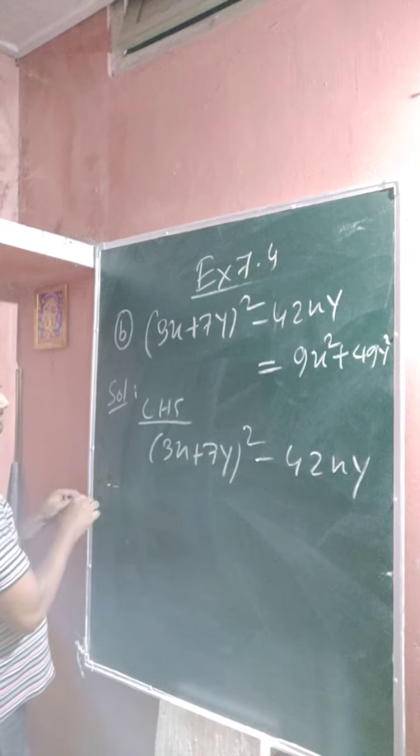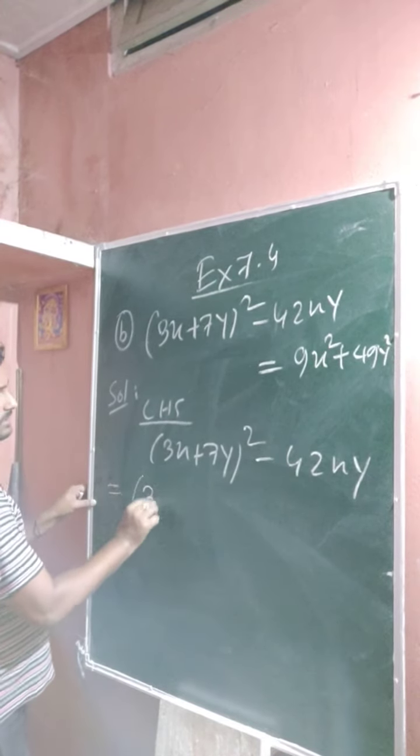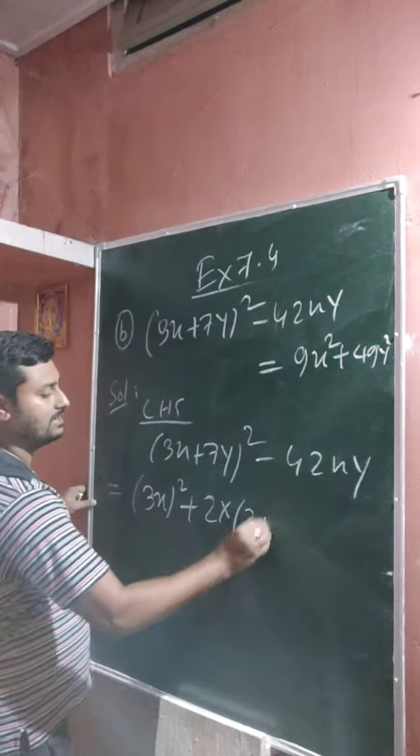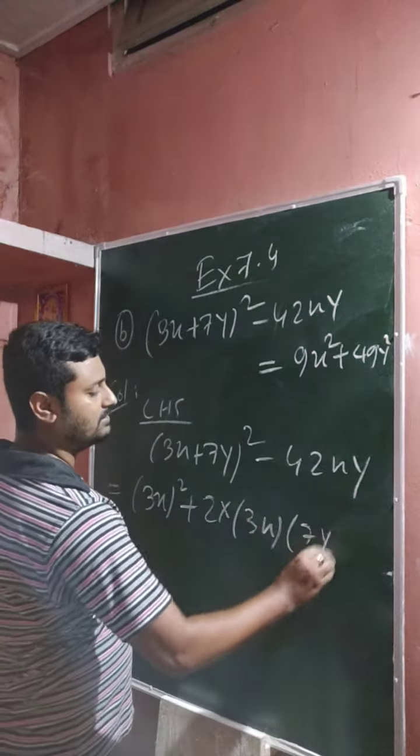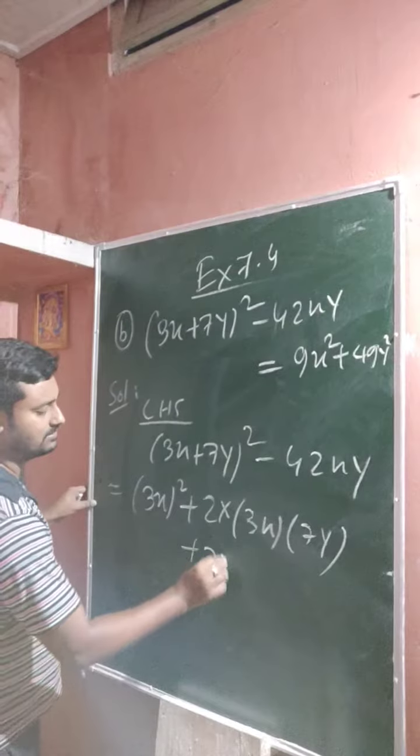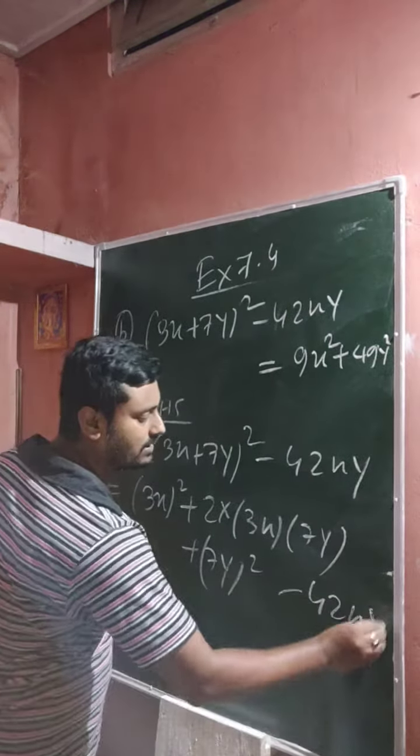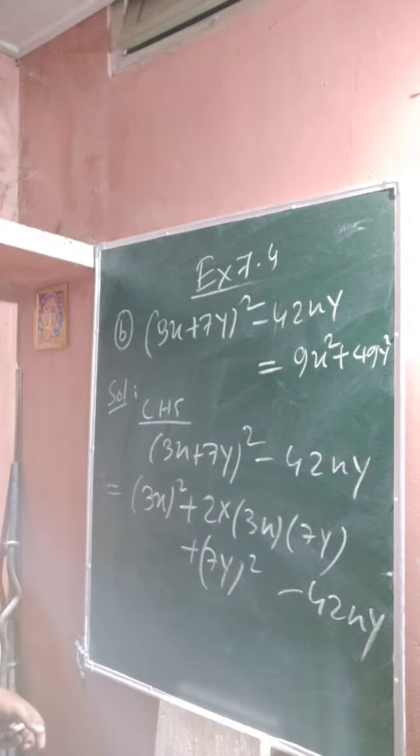a plus b all square formula: a square plus twice ab plus b square. The remaining part is 42xy.